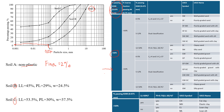Then we look at whether we have more gravel or sand, by checking what percentage passes through Sieve No. 4, which is the 4.75 mm size. For Soil A, that will be about 66%. Since 66% passes through, which is more than 50%, we go to the sand branch.